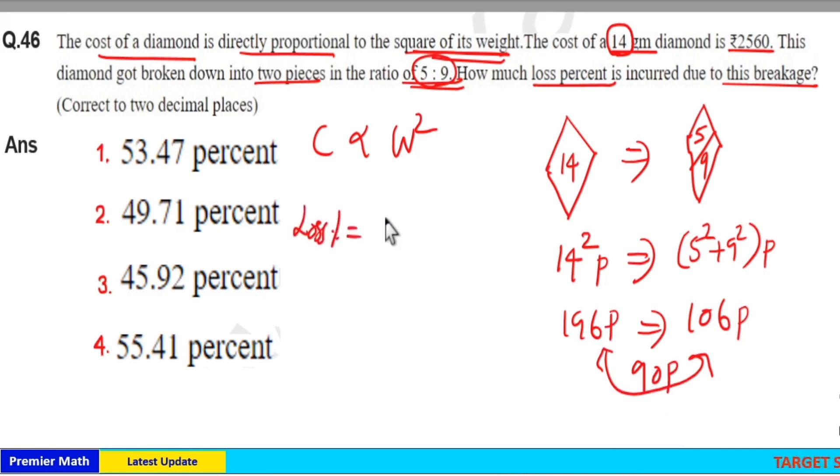Then loss percentage is equal to 90 part loss out of this initial 196 part into 100. Now 4 goes 4 times in 196, 9 times in 36, 25 times in 100.